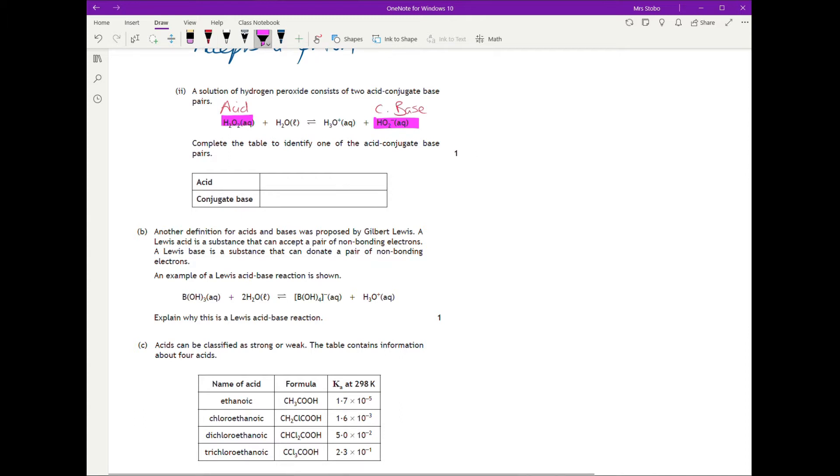So we can see for sure this is the acid and here is our conjugate base. That leaves us with our other pair, which is the water and the hydronium, and we look for which one has donated and which one is then the base. The one that can donate is this one and we are left with our conjugate base here. So pick whichever pair you want, make sure you fill it in.